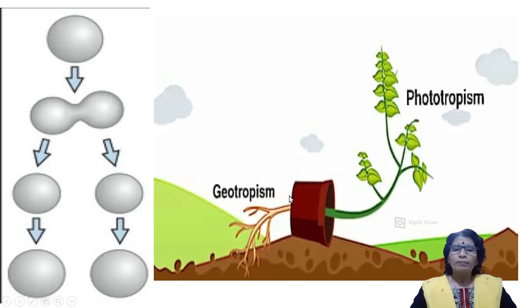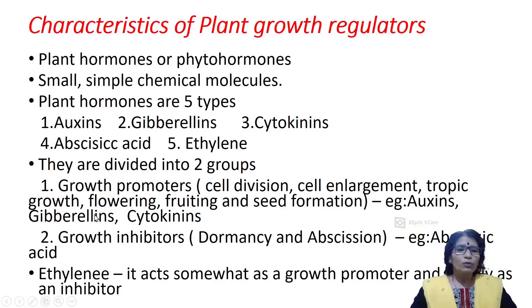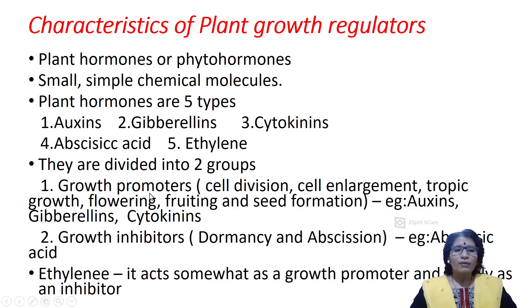In the plant body, the root system grows towards the soil, called geotropism, and the shoot system grows towards sunlight, called phototropism. Both geotropism and phototropism are caused by the activity of growth promoters. Flowering during particular seasons — for example, jasmine flowers in summer and chrysanthemum in winter — is also caused by growth promoters. Fruiting and seed formation following fertilization are also regulated by growth promoters.